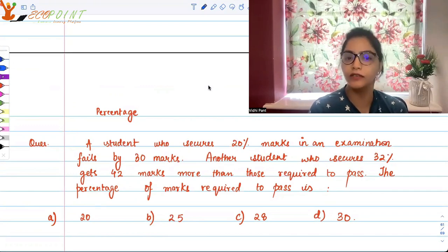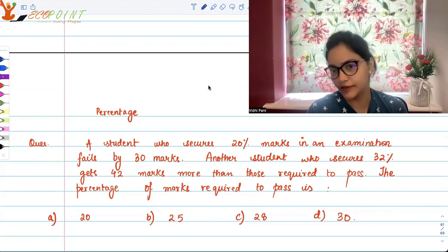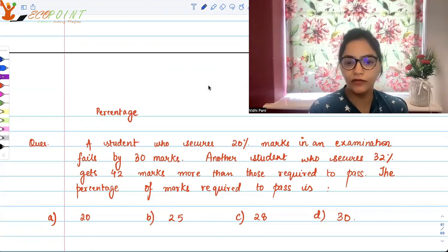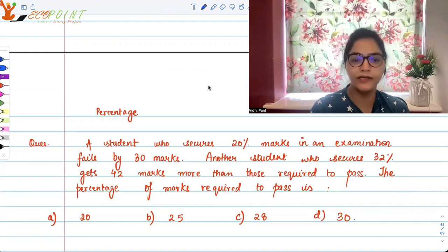Another student who secures 32 percent gets 42 marks more than those required to pass. The question asks: what is the percentage of marks required to pass?